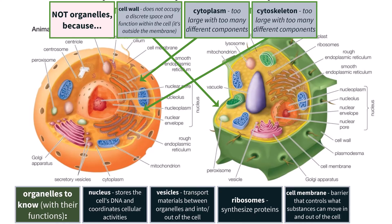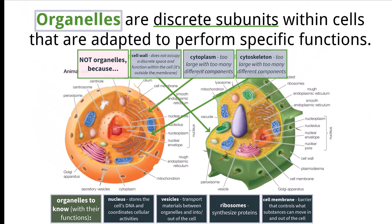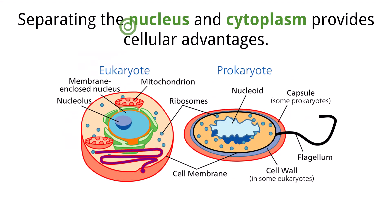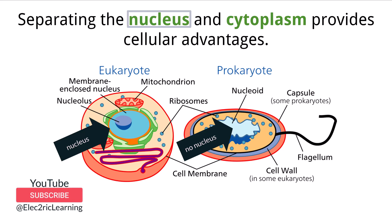Make sure you know these specific examples and the differences between them for the IB exam. Organelles like the nucleus provide a great benefit to eukaryotic cells for multiple reasons. Recall that prokaryotic cells do not have a nucleus, whereas eukaryotic cells do. The main difference here is that a eukaryotic cell has a way to protect and manage the DNA that is housed in the nucleus, where the prokaryotic cell does not.